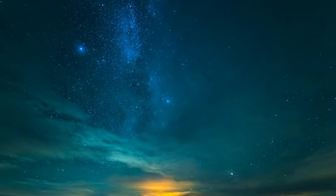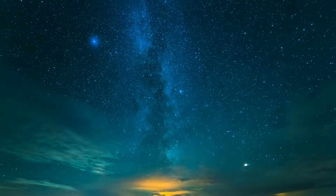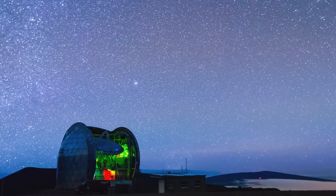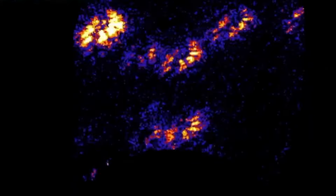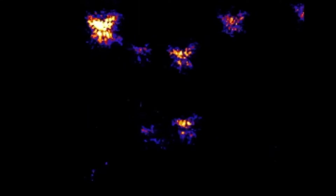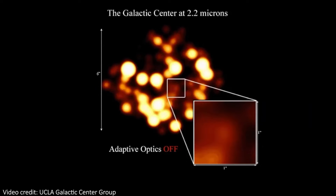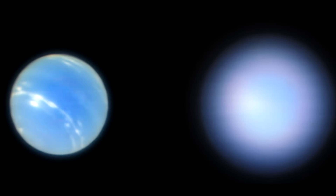Also, due to the phenomenon of dispersion — the dependence of refractive index on wavelength — the star's image may appear to split into several separate images of different colors. From the perspective of an Earth-based observer, not only the brightness and position, but also the color of the observed star changes. Twinkling stars in the night sky present a beautiful sight, but for astronomers, this twinkling is a significant headache. Instead of a bright and clear image of a star in a ground-based telescope, they receive a blurry and fuzzy image, which is particularly critical when observing faint objects with small angular sizes.